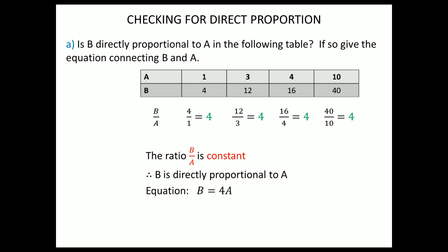The temperature of a cup of tea is not directly proportional to time, mainly because it's not a straight line. Now, given a table, can you work out whether b is directly proportional to a? We do the ratio b divided by a for each pair and see if it's the same. In this example: 4 divided by 1 gives 4, 12 divided by 3 gives 4, 16 divided by 4 gives 4, 40 divided by 10 gives 4 — the ratio is constant, so b = 4a.